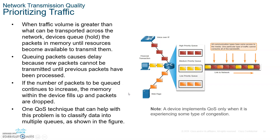We have to prioritize the traffic. If there's a lot of traffic, the queue can get filled, and the incoming traffic is dropped. Dropping incoming packets of real-time communication protocols is unacceptable. Therefore, one way quality of service can help us is by classifying the data into multiple queues.